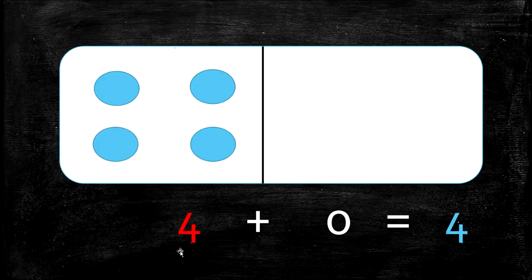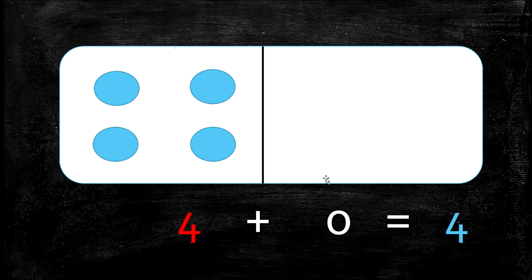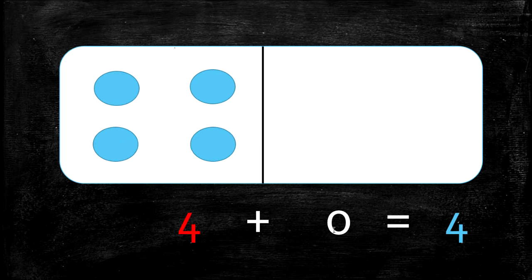The first fact we want to look at is 4 plus 0 equals 4. If we look at our dot cards, in the first box we have 1, 2, 3, 4 — we have 4 circles. In the second block we have 0 circles. So if we add 4 plus 0, how many do we have altogether? 1, 2, 3, 4. Because 4 plus 0 equals 4.